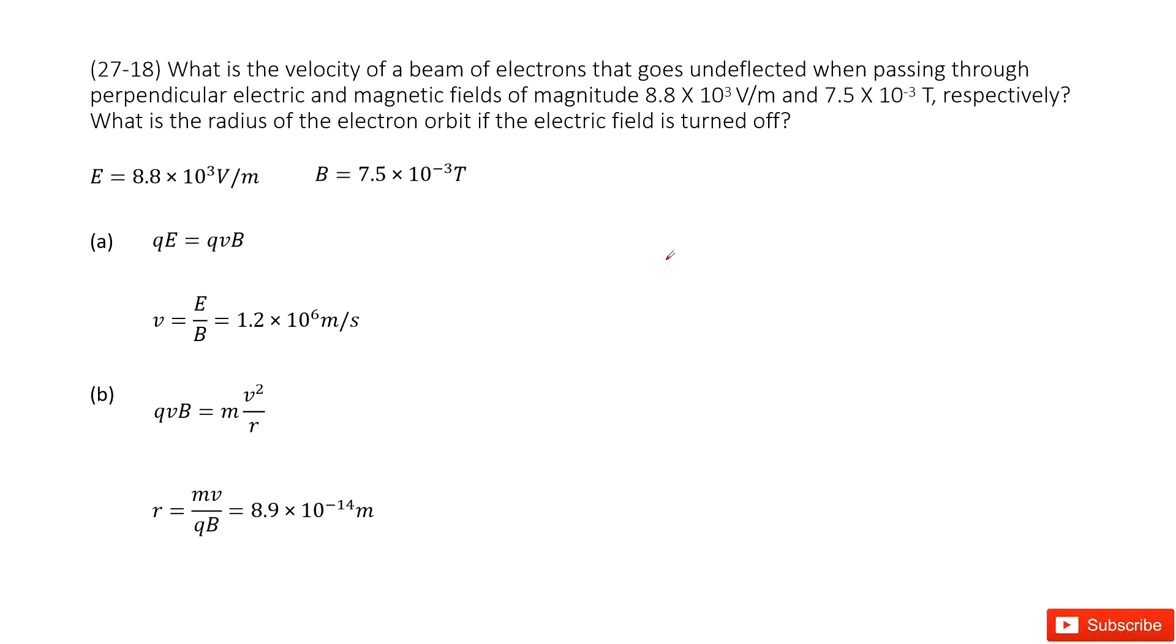There we have a beam of electrons that goes undeflected when passing through perpendicular electric and magnetic fields. The keyword is undeflected. This tells us the magnetic force and the electric force are balanced.